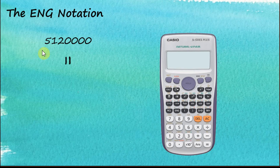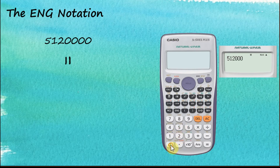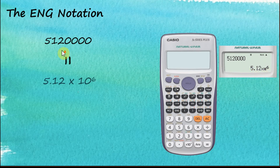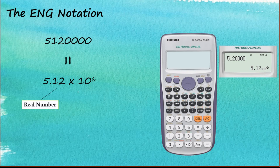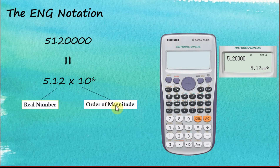Now let's look at engineering notation. Let's say we have the number 512,000,000. Key it in and press equal. When we tap the engineering notation button, the answer is displayed in scientific notation: 5.12 times 10 to the power of 6. Now let's see what happens when we tap the engineering button again. Recall that scientific notation has two parts: the real number and the orders of magnitude.